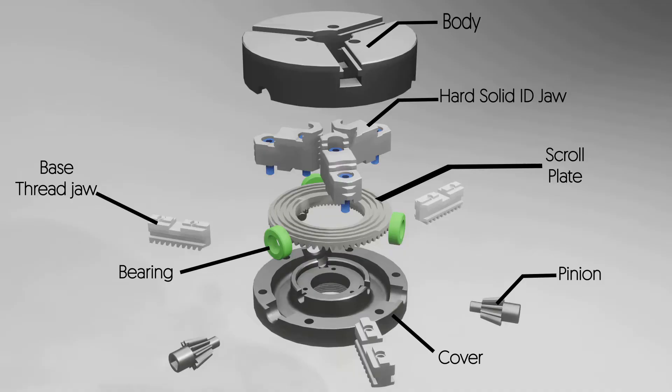Base thread: it is the part that contains spiral threading at the bottom. Normally the hard solid ID jaw and base thread jaw are made as a single part, but in this video they have been shown separately.